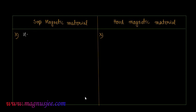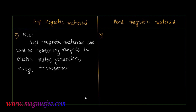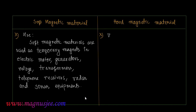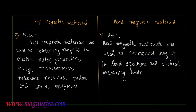Soft magnetic materials are used as temporary magnets in electric motors, generators, relays, transformers, telephone receivers, and radar and sonar equipment. Hard magnetic materials are used as permanent magnets in loudspeakers and electrical receiving instruments.